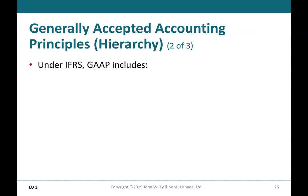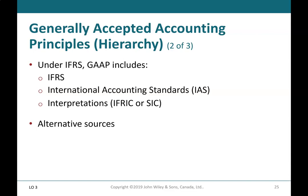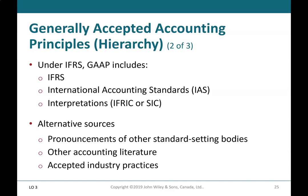Generally accepted accounting principles hierarchy (2 of 3): Under IFRS, GAAP includes IFRS, International Accounting Standards (IAS), Interpretations (IFRIC or SIC). Alternative sources include pronouncements of other standard setting bodies, other accounting literature, and accepted industry practices.